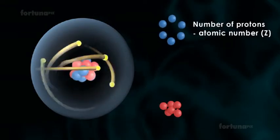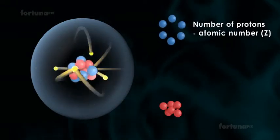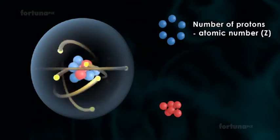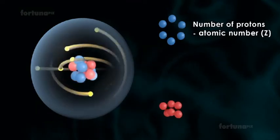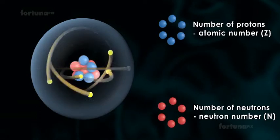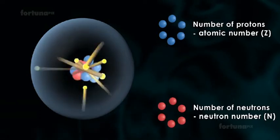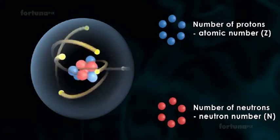The number of protons in the nucleus is called the atomic number, denoted by the letter Z. The number of neutrons in the nucleus is called the neutron number, denoted by the letter N.